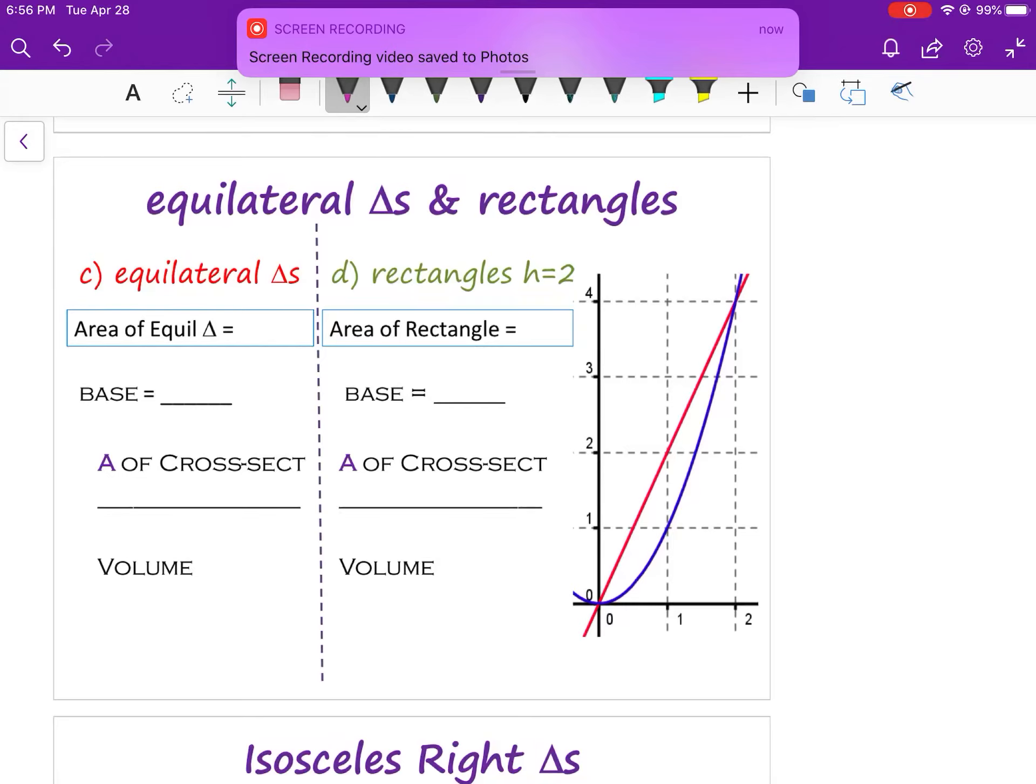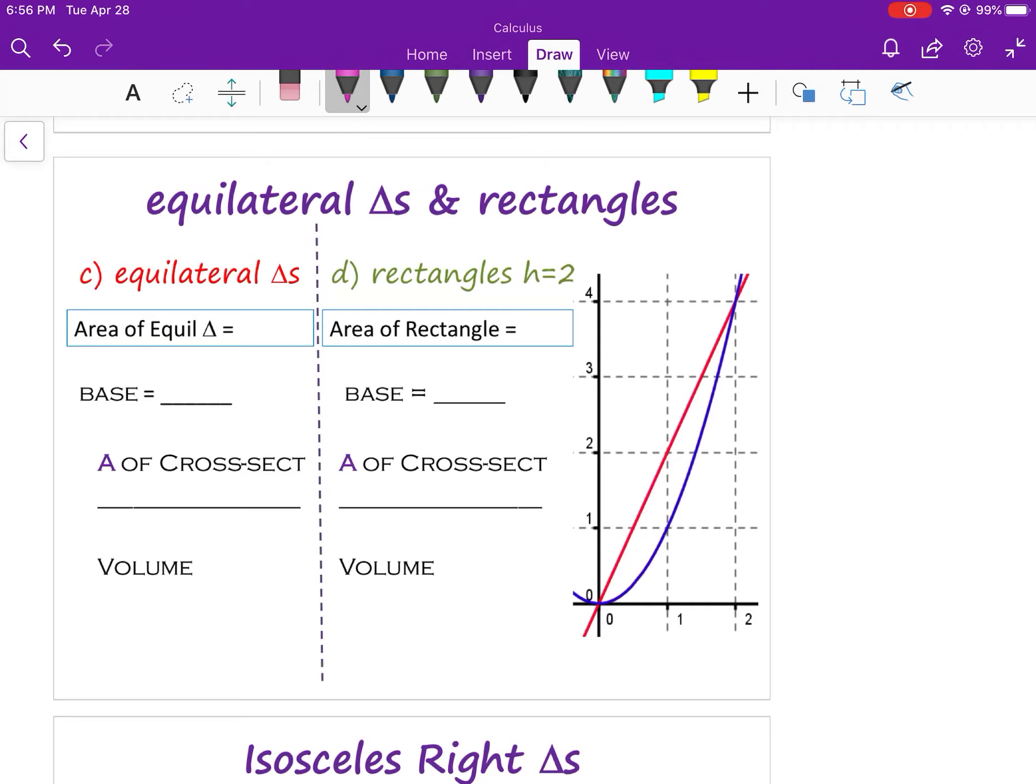Okay, so we know again from before that this rectangle represents our base, and that was 2X minus X squared. So I'm going to go ahead and write that in.